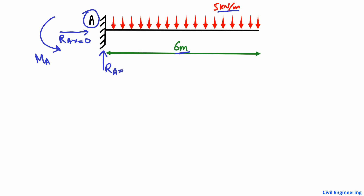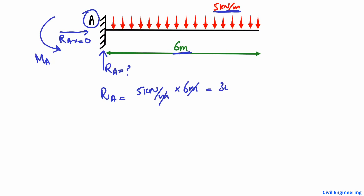The vertical reaction RA is unknown, but it is simple to find. We just multiply the load of 5 kN per meter by the length of 6 meters — the meters cancel and we get 30 kN. So RA equals 30 kN. This total load of 30 kN acts at the center of the beam, and since there is only one support, the entire 30 kN is transferred into that support.